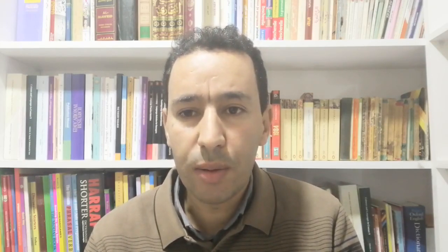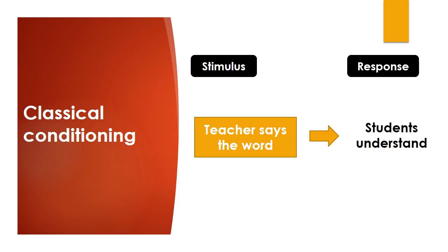Now let's see how this is applied in second language acquisition. The same techniques are used by second language teachers. They provide learners with pictures of objects, followed by the sounds represented by the objects of the picture, like the picture of an apple followed by the word apple. Then they ask students to repeat until they internalize the association between the picture and the word, so the next time students can understand or use the word without the picture. The same principles apply to language rules and structures.